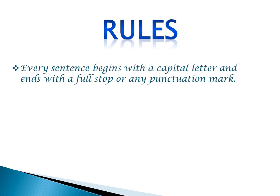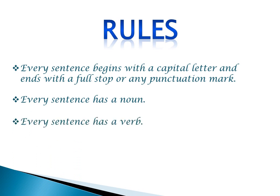Many worksheets were given to you and there were few questions in which you were supposed to rewrite the sentences using a capital letter and a punctuation mark. The next rule: every sentence has a noun. Third rule: every sentence has a verb. A noun is a name of a place, person, animal, or thing. And a verb is an action word.